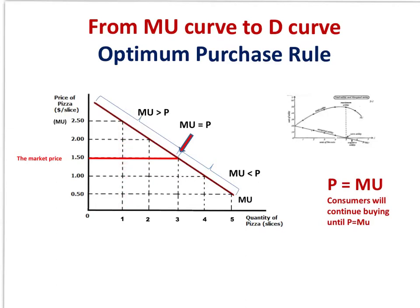I buy the first slice of pizza, consume it, and I get so much satisfaction from it that I value it at 2.5 dollars. I have paid just 1.5 dollars for it. So I got much more satisfaction than I paid for and I feel very happy. I go and buy the second one. I get 2 dollars satisfaction from it and I paid 1.5 dollars — again a good bargain. I got more than I paid for.